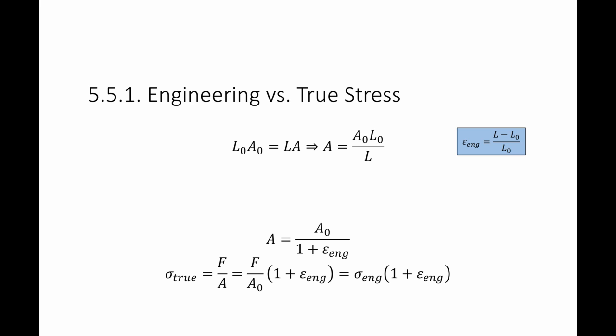From here I can calculate sigma true — the true stress — it's F divided by A. Replacing A using this equation, it's F divided by A₀ multiplied by 1 plus epsilon engineering, which means that the true stress is equal to the engineering stress multiplied by 1 plus the engineering strain.